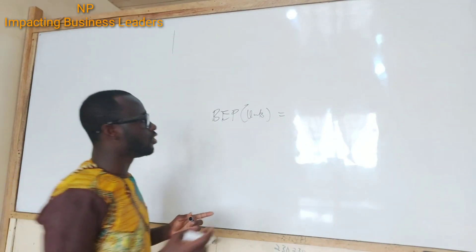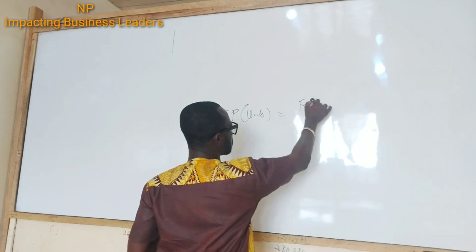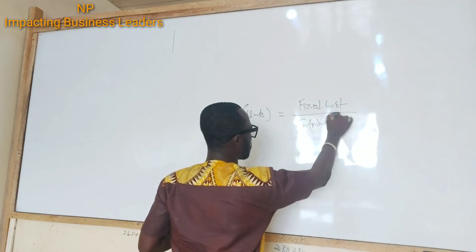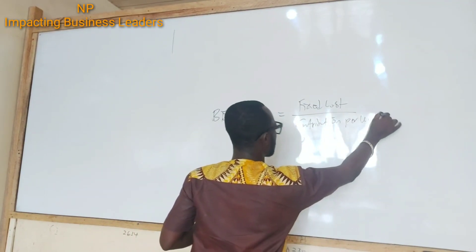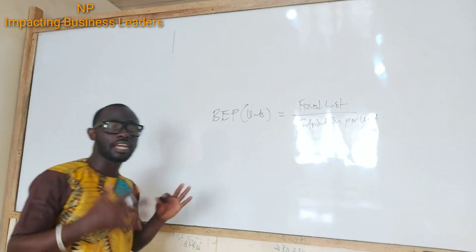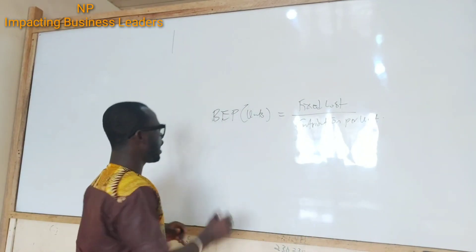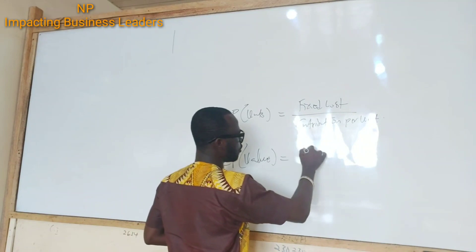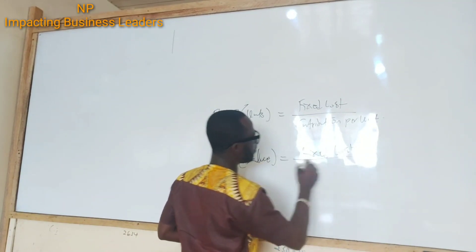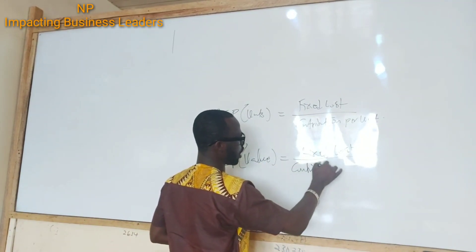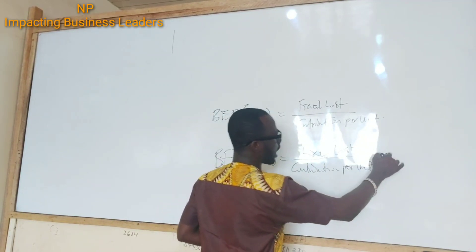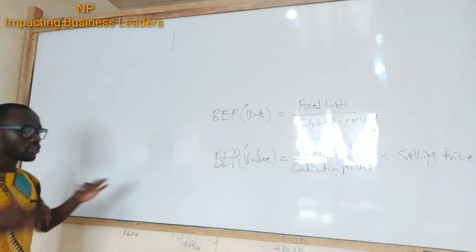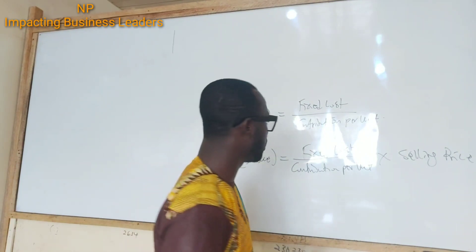As you already know, break-even point in units is your fixed cost divided by contribution per unit — that's how you get break-even point in units. Break-even point in value is fixed cost divided by contribution per unit, multiplied by the selling price — that's how you get break-even point in value.